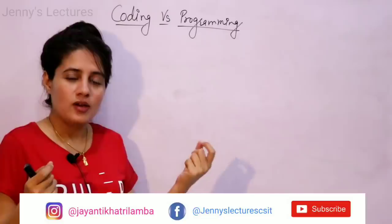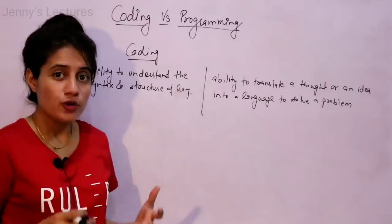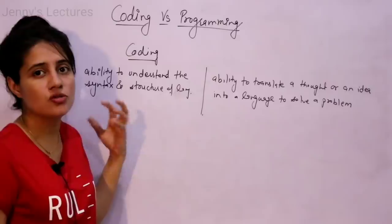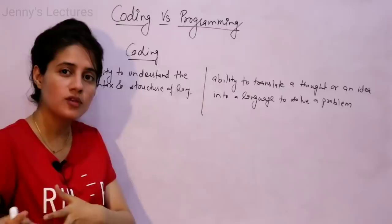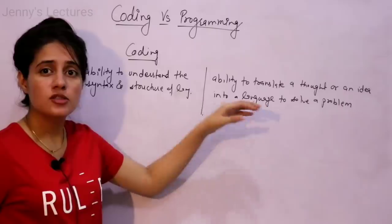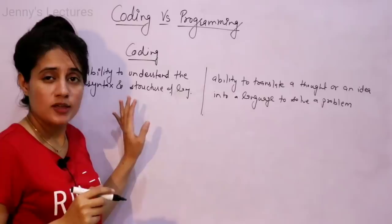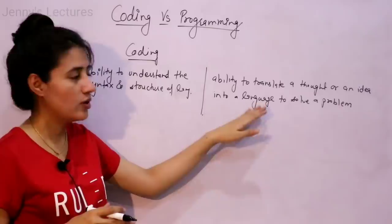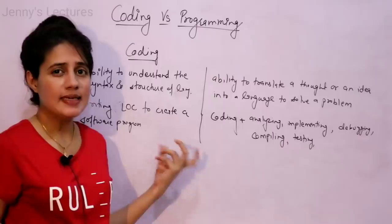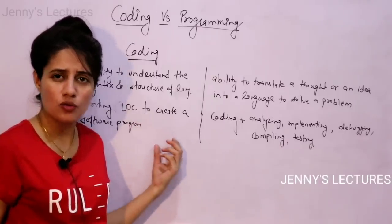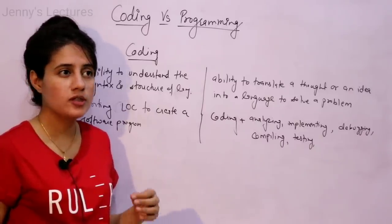Programmers are more expert than coders. Junior coders are considered like junior software developers. Coding is just the ability to understand the syntax and structure of a language and write instructions a machine can understand. Programming is the ability to translate a thought or idea into a language to solve a particular problem. For coding, tools required are a text editor or IDE; for programming, you need analyzing tools, code generators, modeling tools, and testing frameworks.